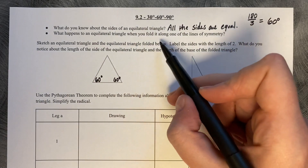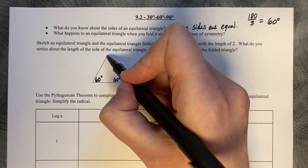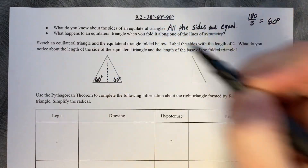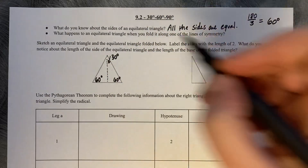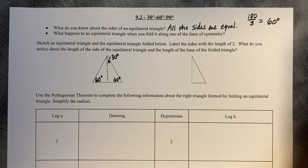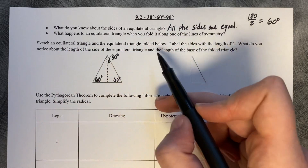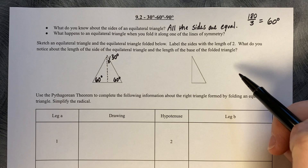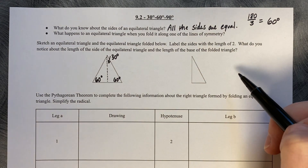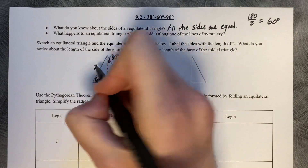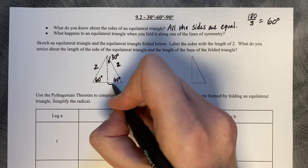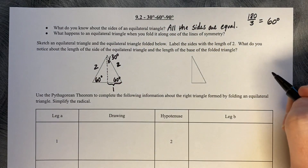What happens to an equilateral triangle when you fold it along one of the lines of symmetry? Imagine that you fold this equilateral triangle along that line of symmetry. What happens to the angle measure up at the top is that that 60 degrees is cut in half, and that corner angle becomes 30 degrees. We've sketched an equilateral triangle and the equilateral triangle folded below. Label the side lengths with the length of 2. What do you notice about the length of the side of the equilateral triangle and the length of the base of the folded triangle? So imagine that this side length was 2. This side length would also need to be a side length of 2, and that means that each half folded length is going to be a length of 1.